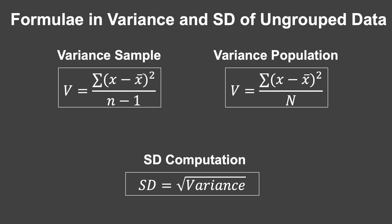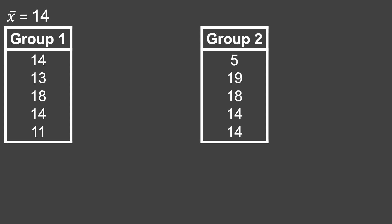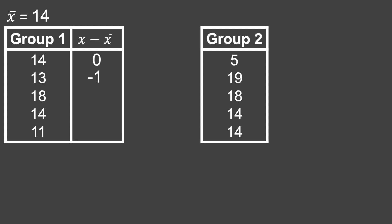To apply this formula, we'll use the same given data of the two groups' scores and identify their variance and standard deviation. Since the given is just a sample, we'll use the sample variance formula: σ(x − mean)² all over n − 1. Starting with group one, we get the difference of each score from the mean: 14 − 14 = 0, 13 − 14 = −1, 18 − 14 = 4, 14 − 14 = 0, and 11 − 14 = −3.